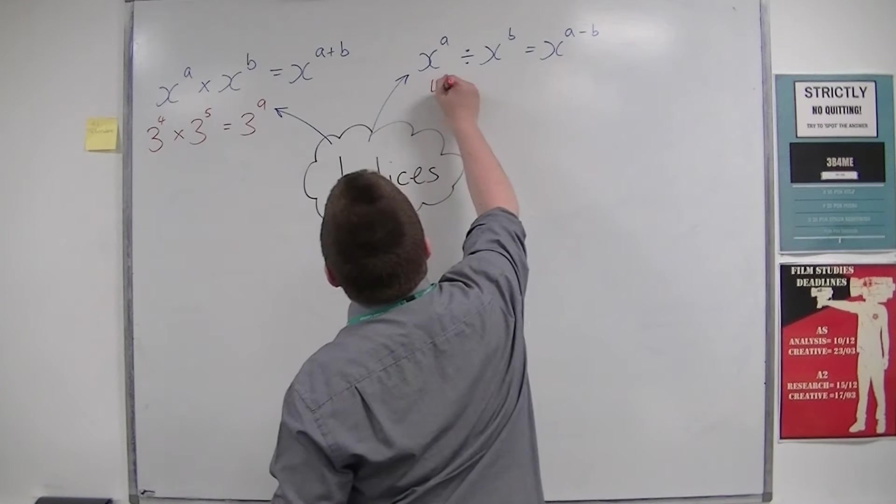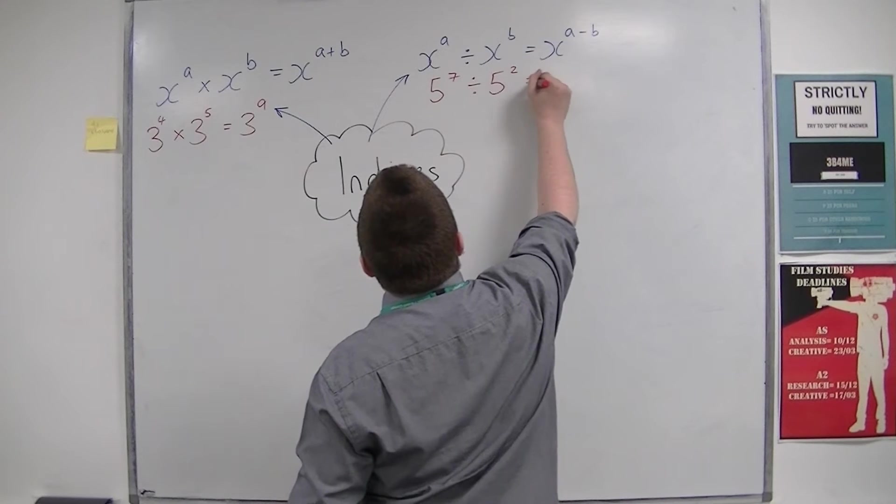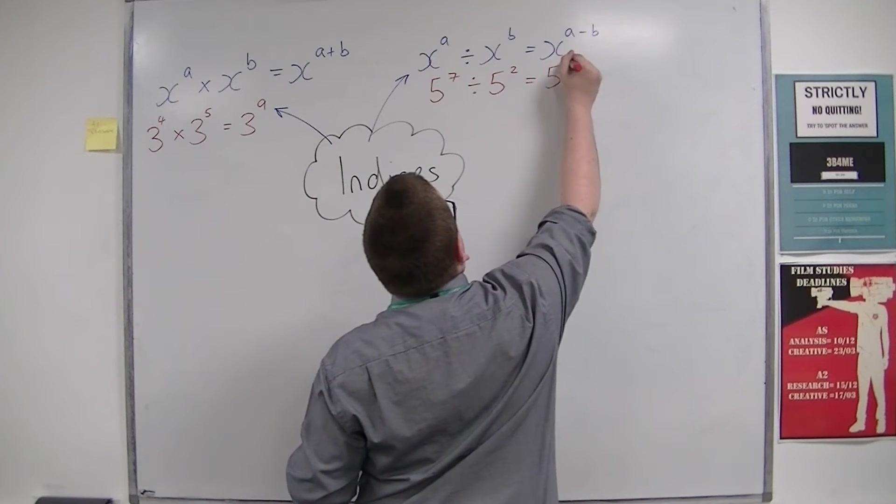So 5 to the power of 7 divided by 5 to the power of 2 is 5 to the power of 7 take away 2, so 5 to the power of 5.